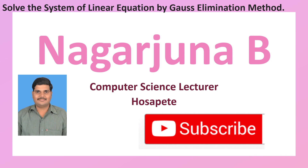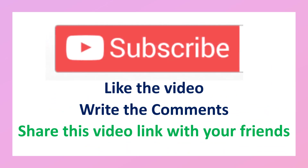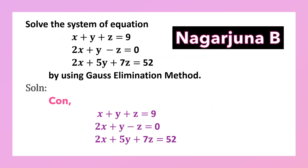Solve the system of equations: x plus y plus z is equal to 9, 2x plus y minus z is equal to 0, and 2x plus 5y plus 7z is equal to 52, by using the Gauss elimination method.